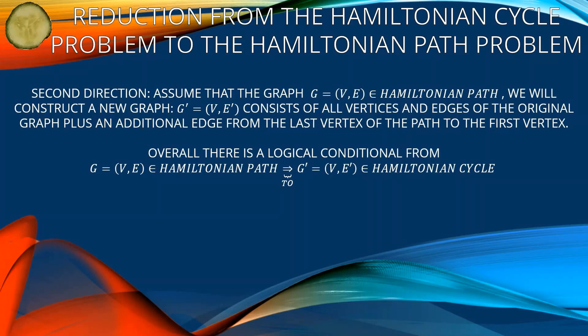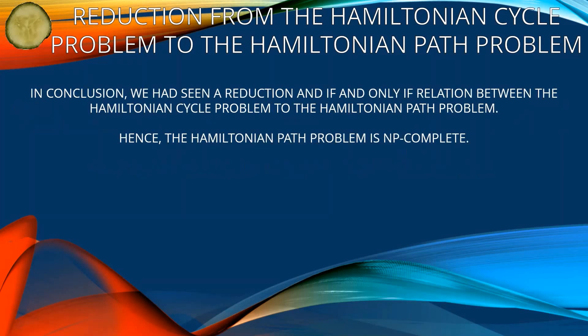Second direction: assume that graph G = (V, E) is in Hamiltonian path. We construct a new graph G' = (V', E'), where V' and E' consist of all vertices and edges of the original graph plus an additional edge from the last vertex of the path to the first vertex. Overall there is a logical conditional from G = (V, E) in Hamiltonian path to G' = (V', E') in Hamiltonian cycle.